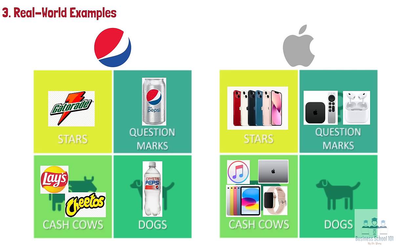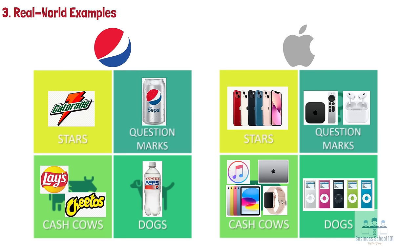Fourth, Dogs. Considering the performance of all the products that Apple offers, the declining market demand and high innovation in the music sharing industry have made Apple iPods fall into the dogs quadrant of the BCG matrix.